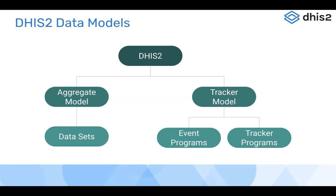Event programs are for key events — notifying key events — which are sort of a line listing register. Tracker programs are for tracking entities over a longer period of time for different disease programs and other scenarios, both in health and non-health domains.